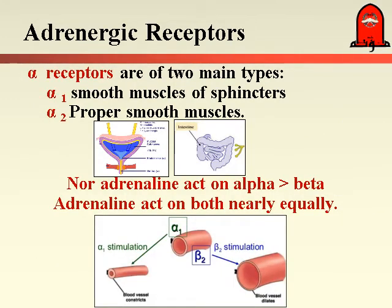The adrenergic receptors include beta and alpha receptors. Alpha-1 produces contraction of smooth muscle and is present in sphincters like the bladder sphincter. So stimulation of the sympathetic nervous system produces relaxation of the bladder wall via beta receptors and contraction of the sphincter via alpha-1, allowing accommodation of more urine without urination. Alpha-2 receptors are present in intestinal smooth muscle and are responsible for relaxation; overstimulation of alpha-2 in the intestine produces paralysis of the intestine.